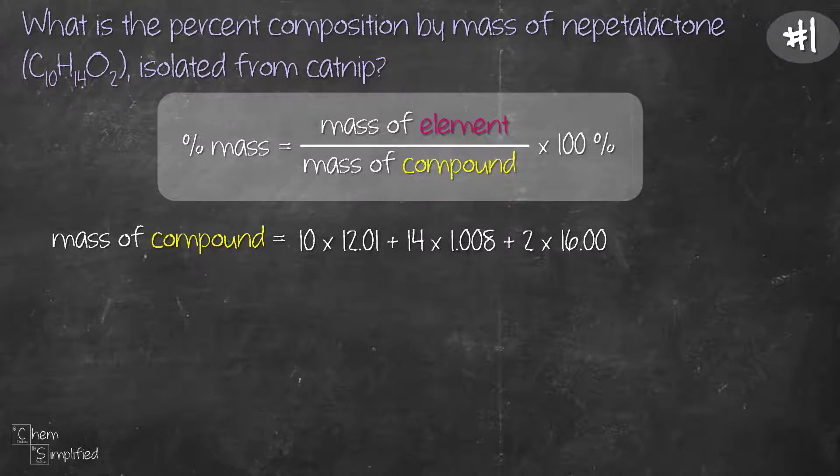And then we add them all together and we get 166.212 grams per mole. That is the mass of the compound which is the molar mass of nepetalactone.